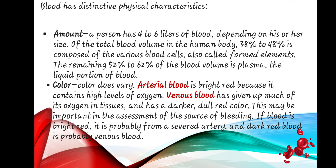Regarding blood composition by percentage: 38% to 48% is composed of the various blood cells, also called formed elements. The remaining 52% to 62% of the blood volume is plasma, the liquid portion of the blood.